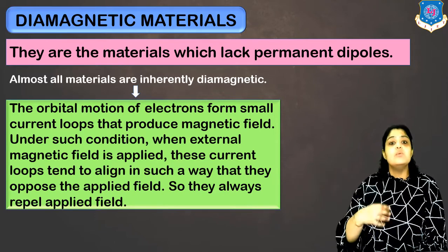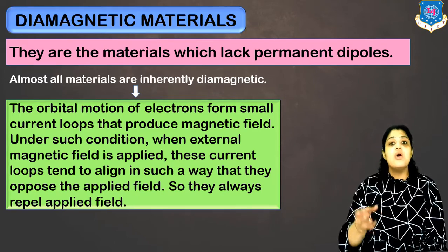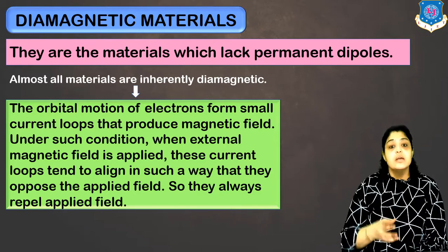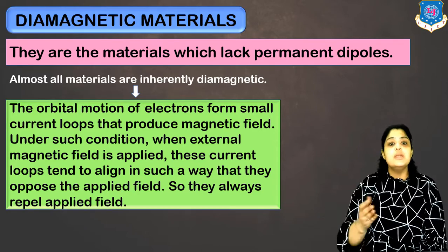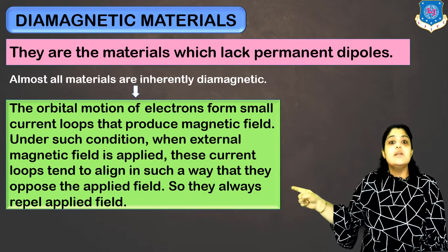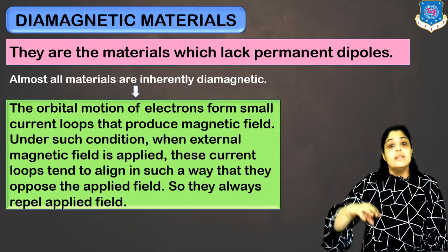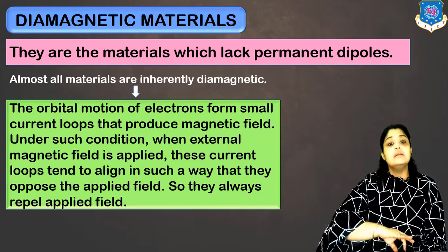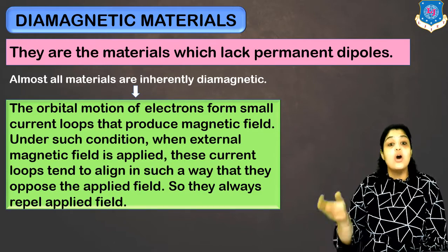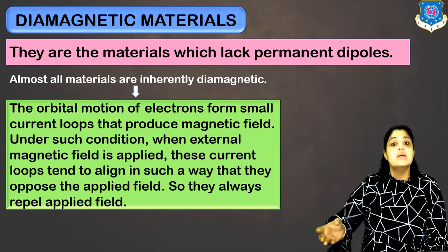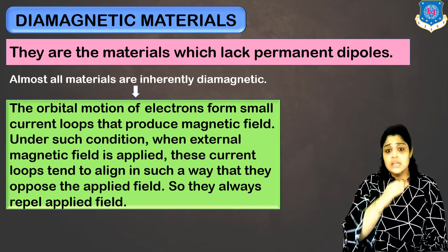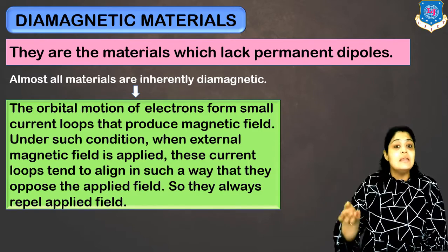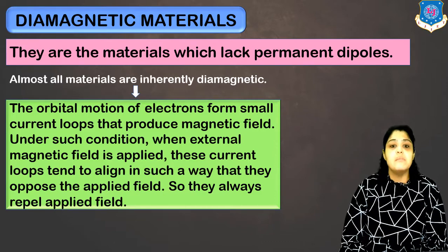When you apply an external magnetic field to diamagnetic materials, small current loops develop inside the material which lead to an internal magnetic field. But the internal magnetic field is opposite to the applied magnetic field. Lenz's law is applicable here because the external magnetic field leads to the induction of an internal magnetic field that opposes the external magnetic field. Hence these materials will always repel magnetic field, as these current loops tend to align in such a way that they oppose the applied magnetic field.